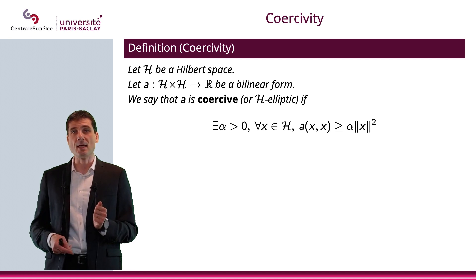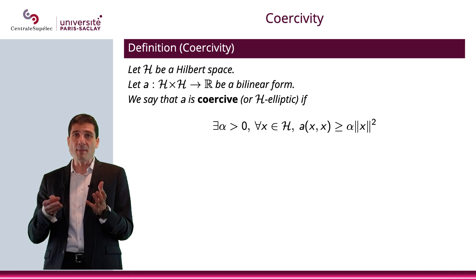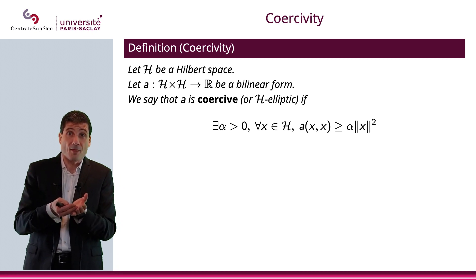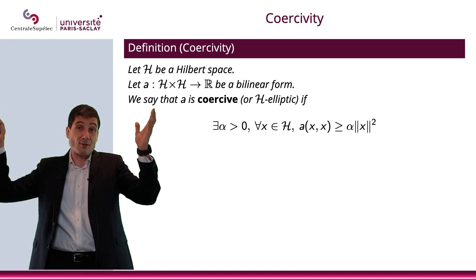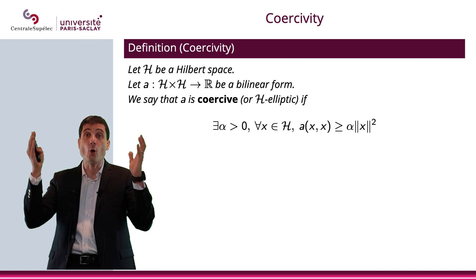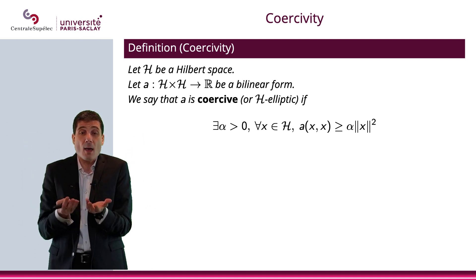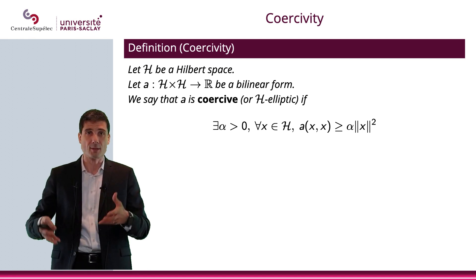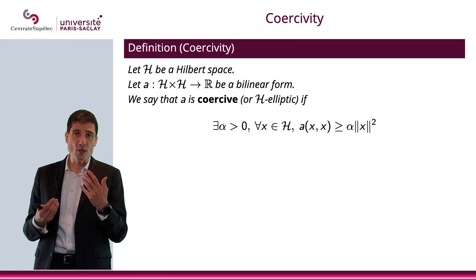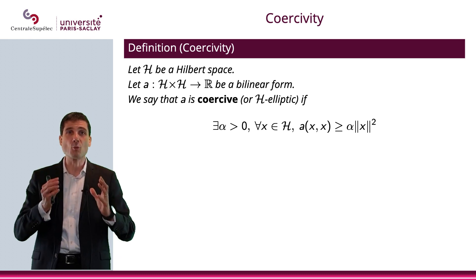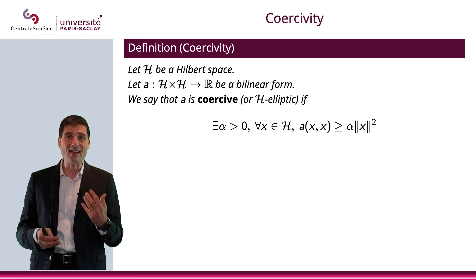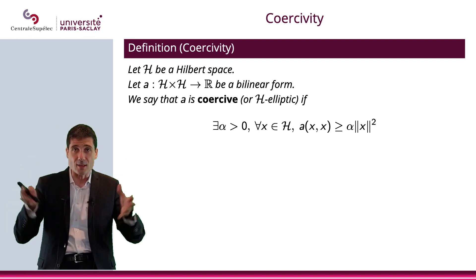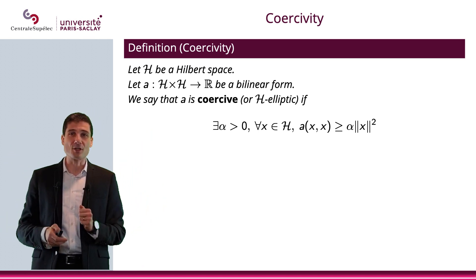The second thing I would like to say is what it means. When x goes to plus infinity, then your A(x,x) has to go to plus infinity as well, and it has to go in a way that is somehow bounded below by some kind of a parabola, a paraboloid if you prefer in multi-dimension. That is the intuition behind it. That is what coercivity means. A bilinear form is coercive if, when it goes to plus infinity, it does this.